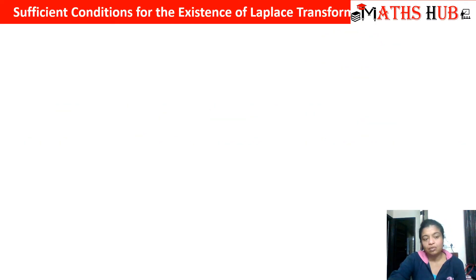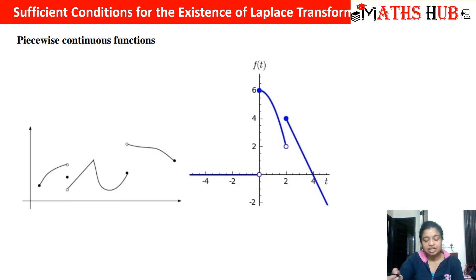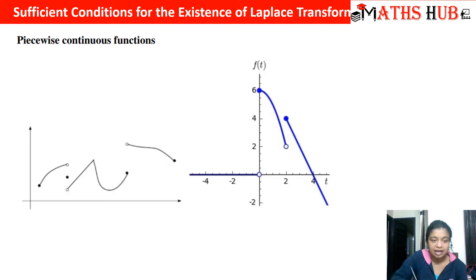Now let us understand the sufficient conditions for the existence of Laplace transform. We need to understand two key terms. The first is a piecewise continuous function. In your plus 2 you have already learned what a continuous function is. In simple terms, if you draw the graph of a function and you are not able to lift your pen, then that function is said to be continuous.